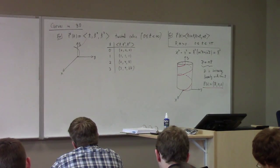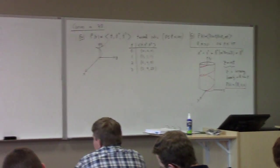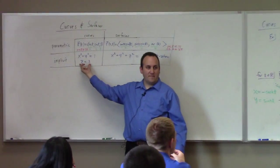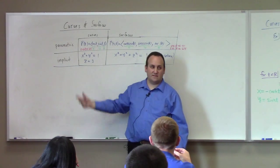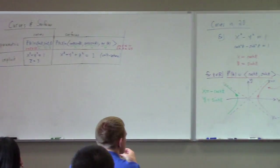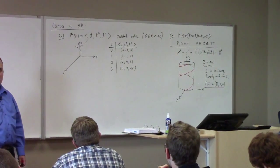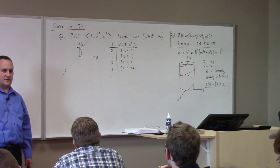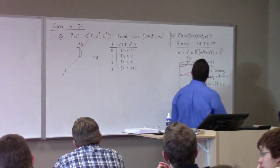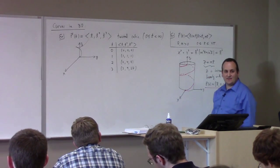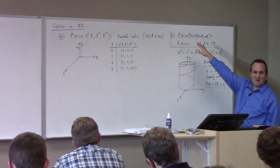The helix is best described parametrically. Describing it as the intersection of two surfaces would involve something called a helicoid, which is awkward. The helix's happy place is parametric form.